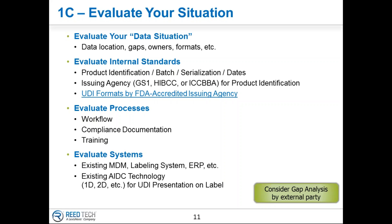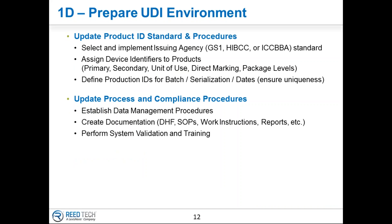This final step in the preparation would be to get that particular standard in place. If you are currently not using GS1 or HIBCC, for example, you'll need to map your identifiers over to that new standard and make those process changes. Keep your quality management system up to date.